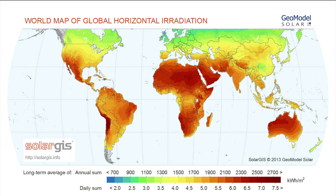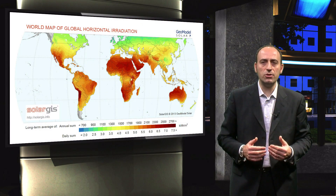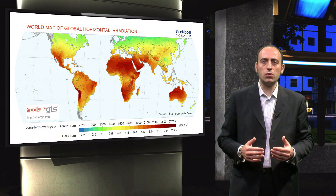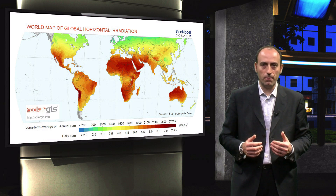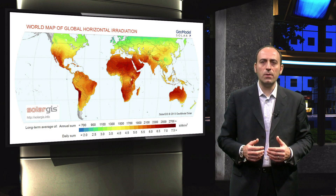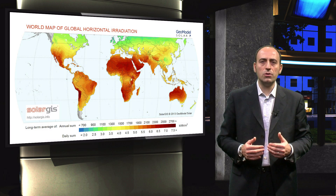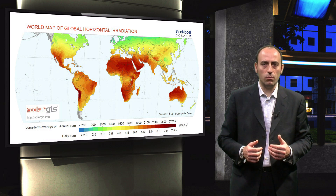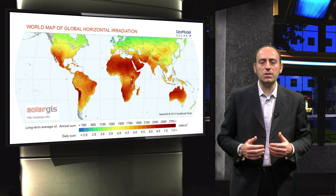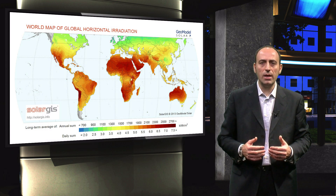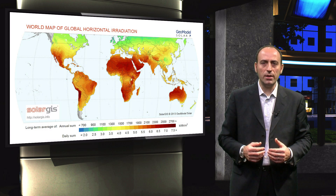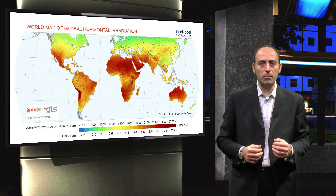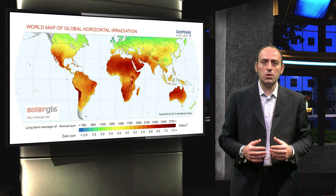The difference is not only in the amount of energy received during the year, but also in how it is distributed during the year. Indeed, the more you move away from the equator, the stronger the difference becomes between summer and winter. This is known as seasonal variation and it plays a very important role in the design and reliability of the PV system, in particular for storage.